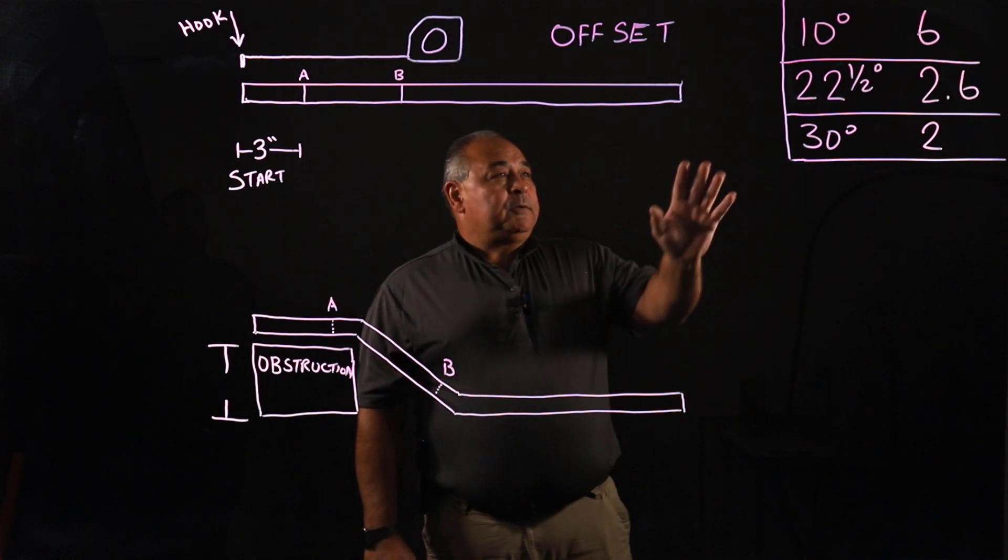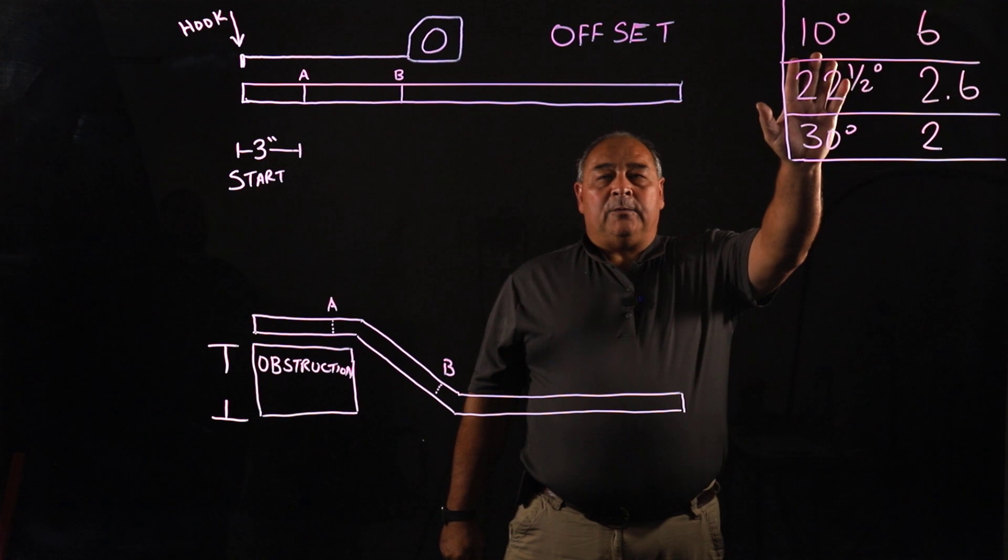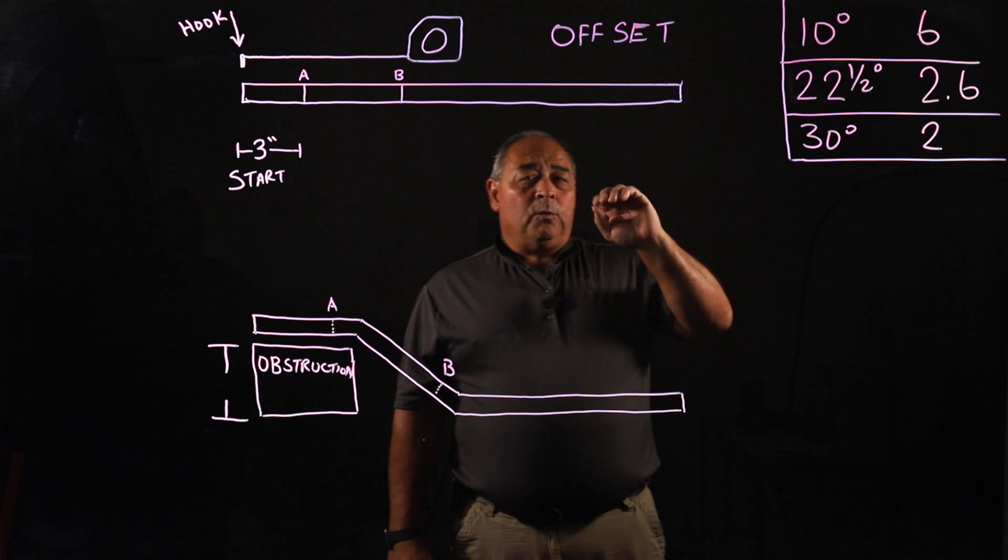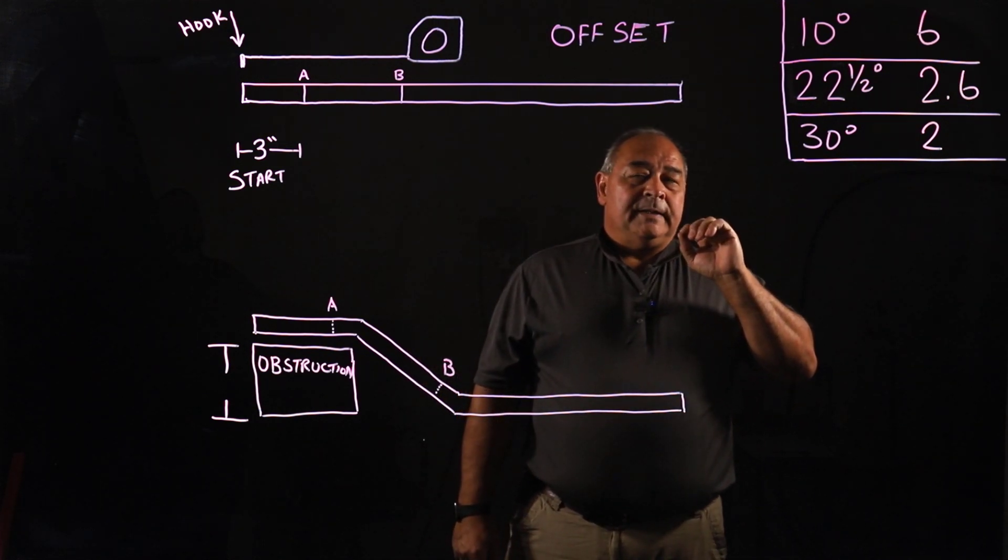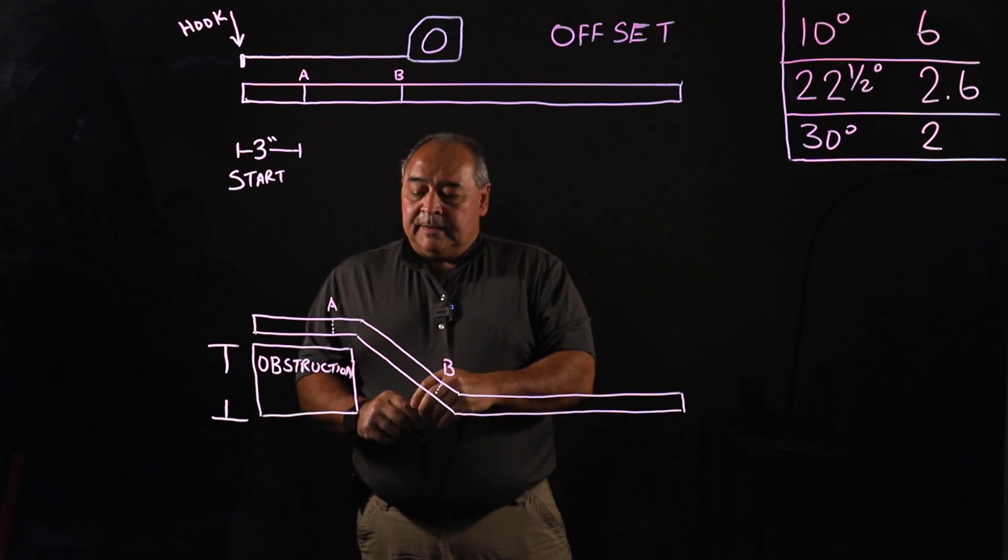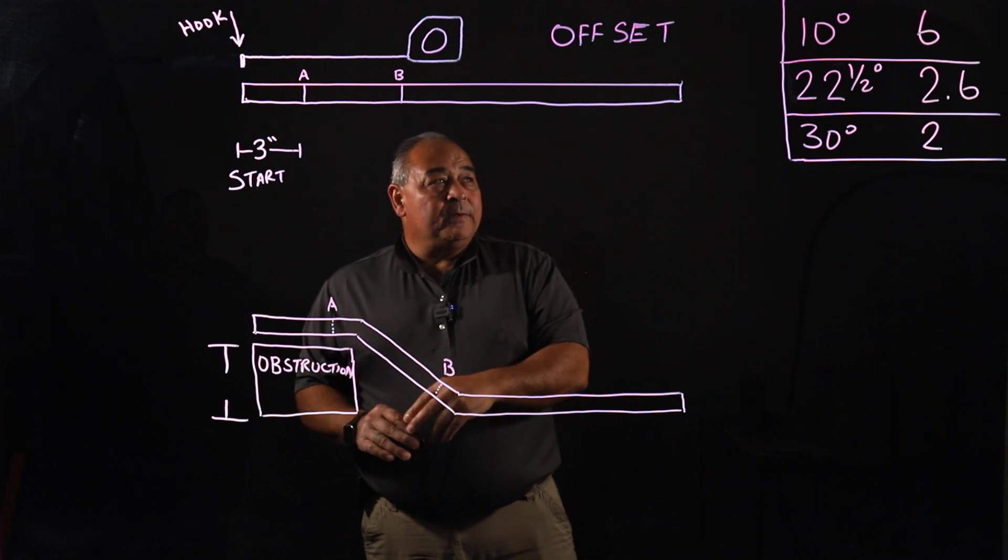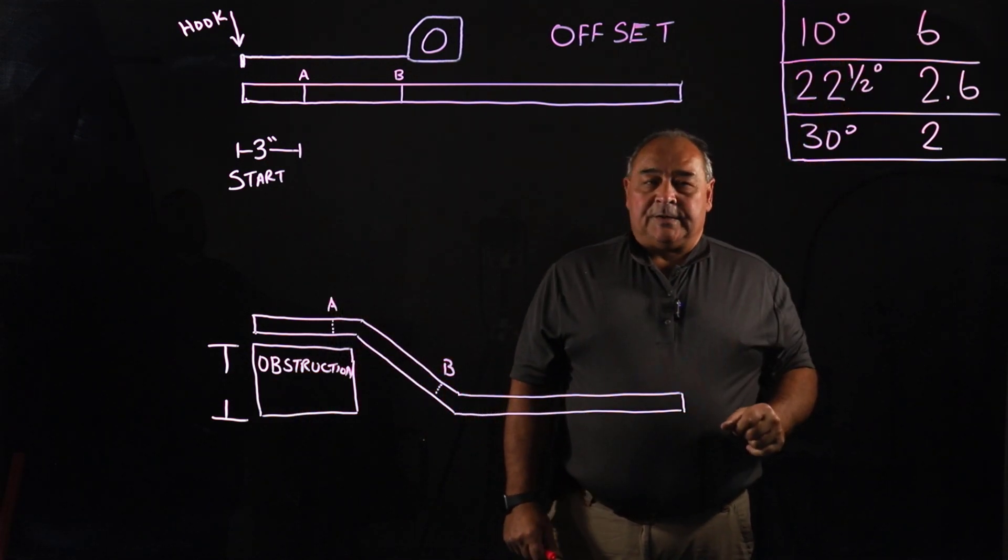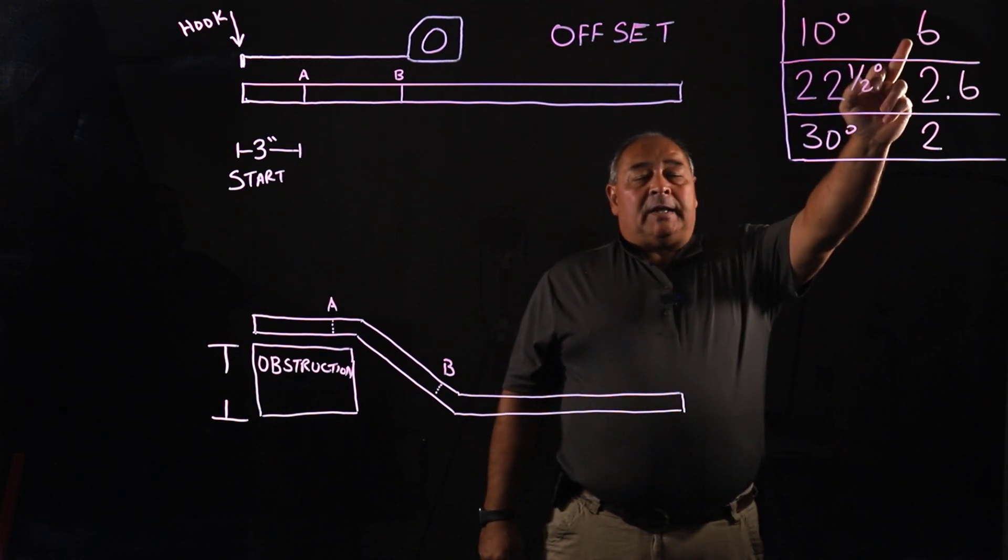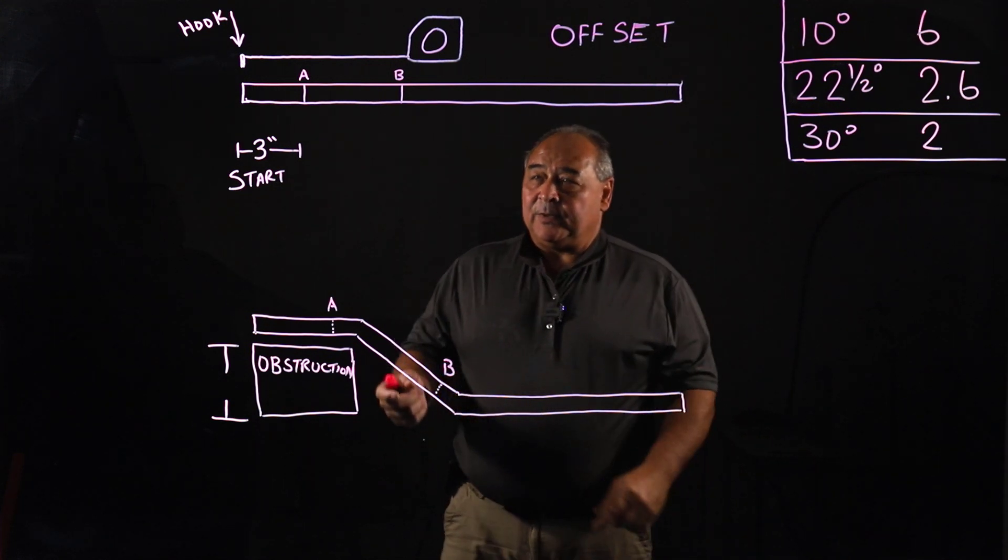Why is that? If you look over here, we've got this grid over here that talks about what our multipliers are. Our multipliers is what we multiply our measurement of our obstruction by. Like if this obstruction, let's say it was five inches. If it was five inches and we were going to use 10 degree offsets or 10 degree bends to make an offset, we would multiply five inches times six.